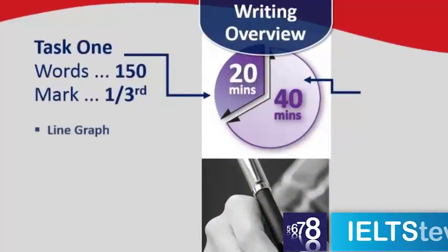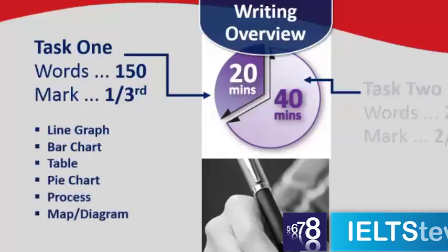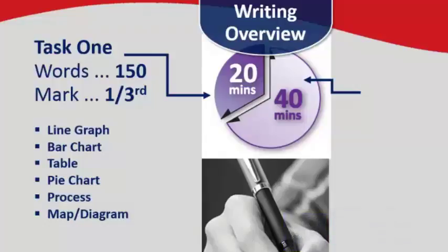Task One writing will be 150 words. Your mark is worth one third. You'll be describing these kinds of pictures - an image, either a line graph, a bar chart, a table, pie chart, process, or a map or diagram.